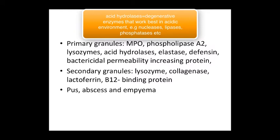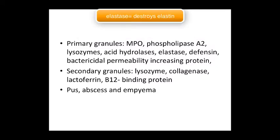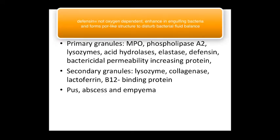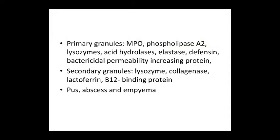Also in the primary granules: nucleases and elastase, which destroys the extracellular elastin of bacteria. Defensin helps engulf bacteria and forms pores that cause efflux of nutrients the bacteria need to survive. Bactericidal permeability-increasing protein (BPI) increases membrane permeability so that intracellular bacterial proteins leak out, more fluid enters the bacteria, and it bursts.